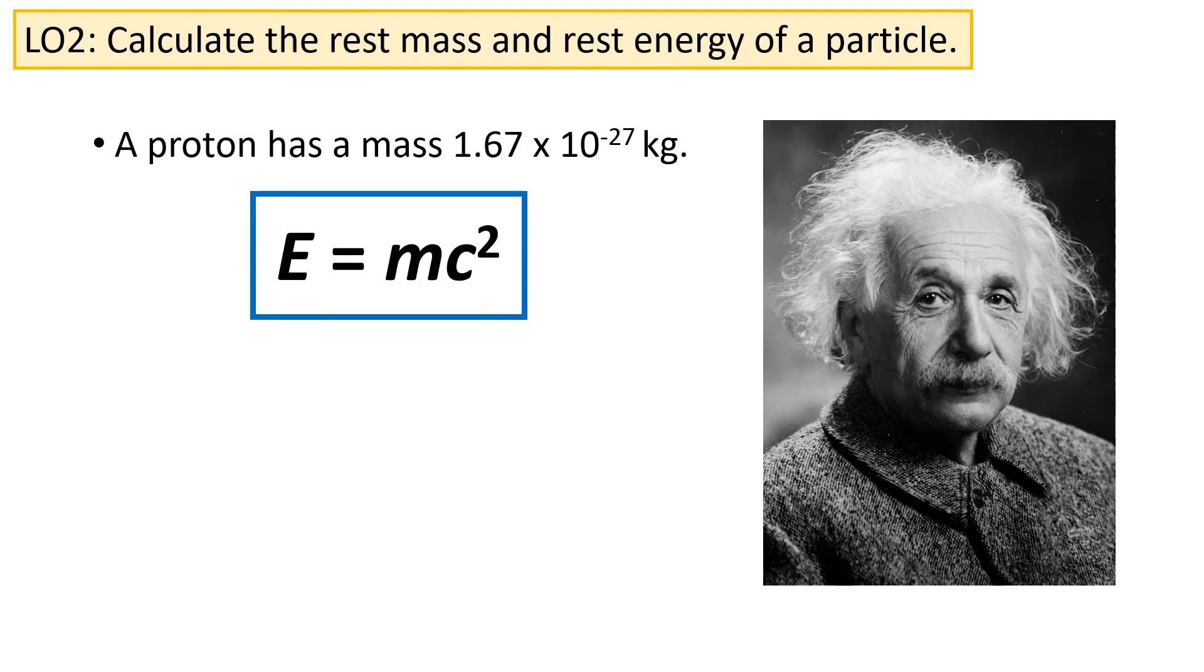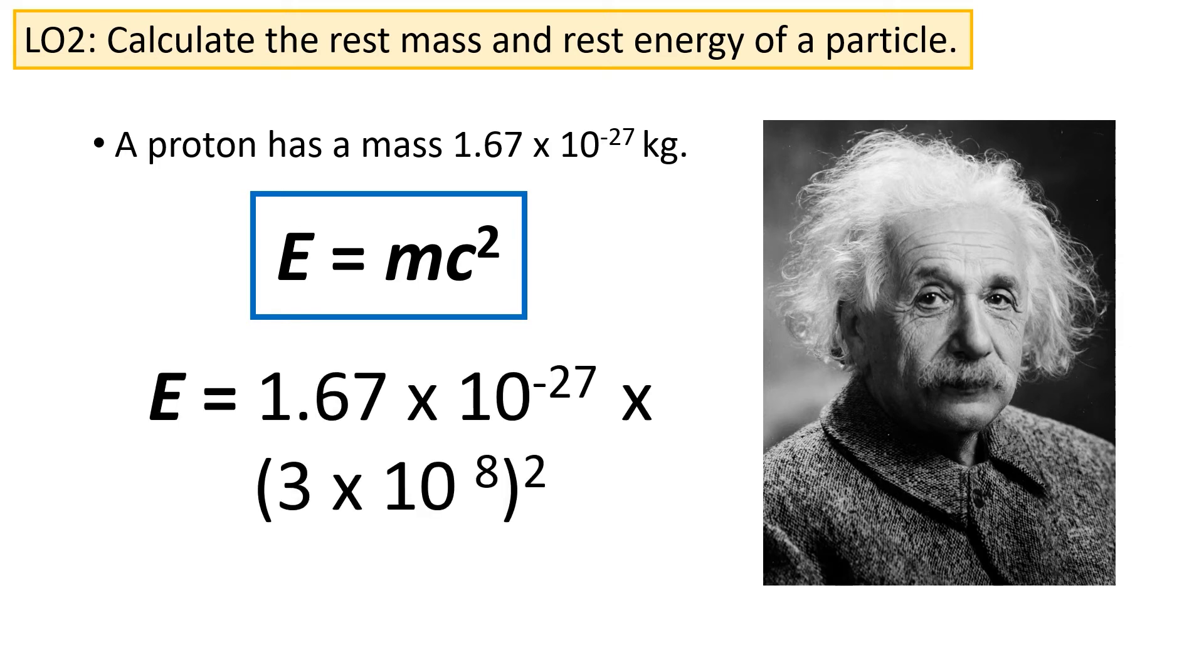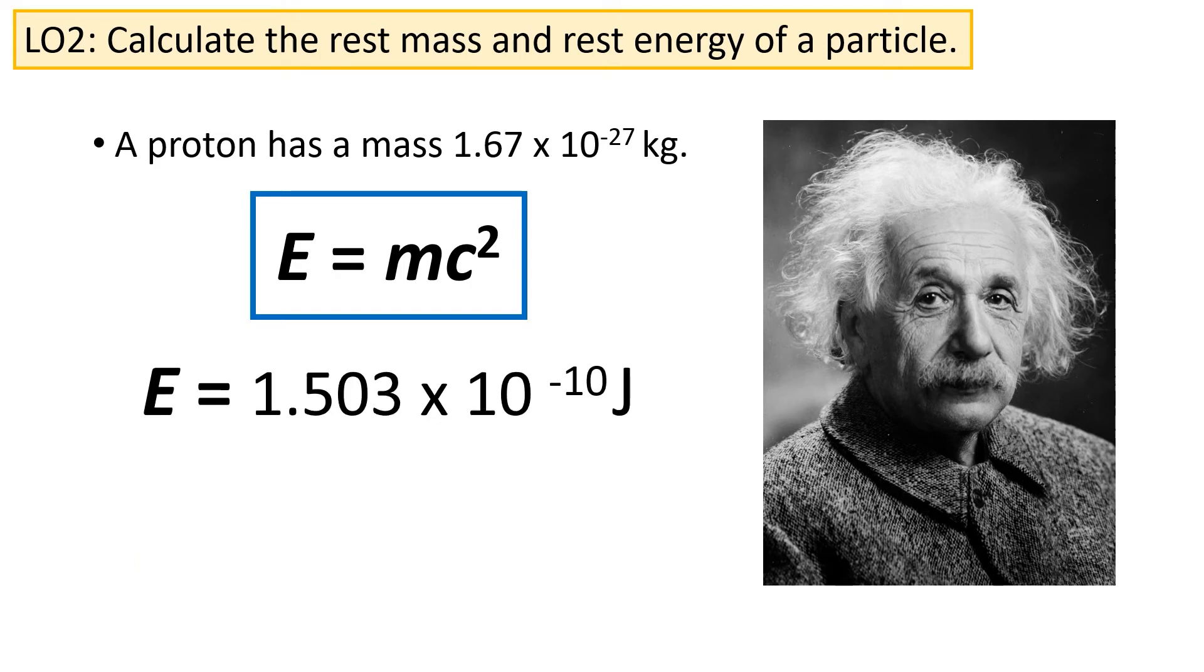A proton has a mass 1.67 times 10 to the minus 27 kilograms. Putting this into the equation, we can calculate the rest energy of the proton. It's equivalent to 1.503 times 10 to the minus 10 joules. This is again not a very convenient number. Instead, generally speaking, when we see values for the rest energy quoted, we will see them in electron volts.